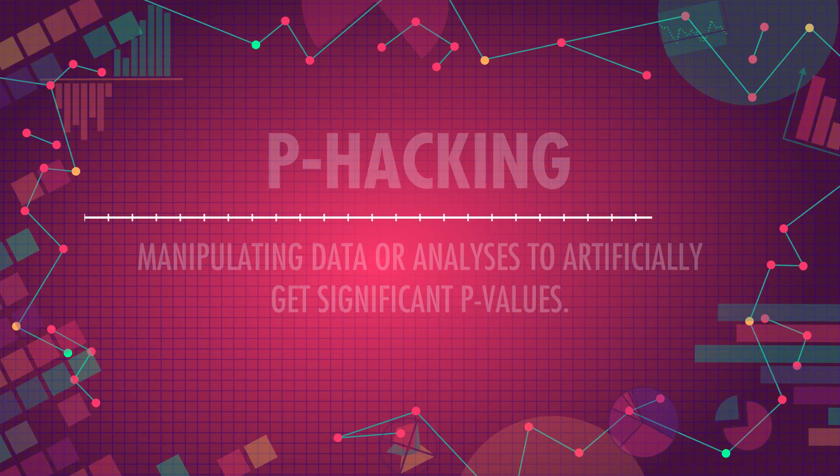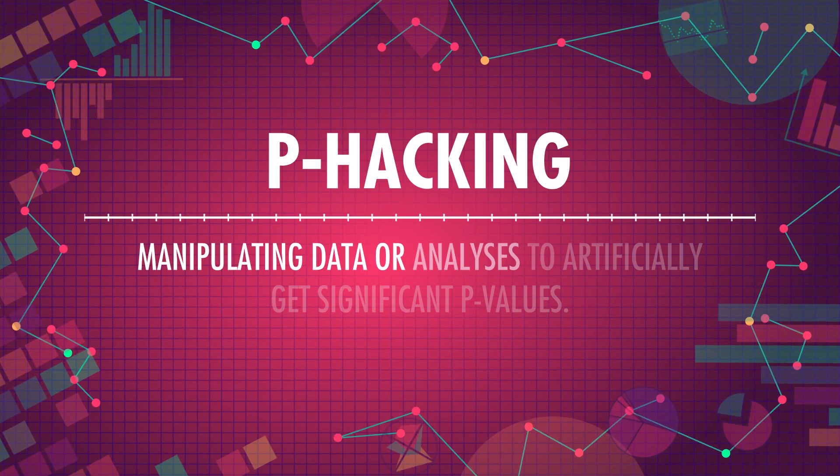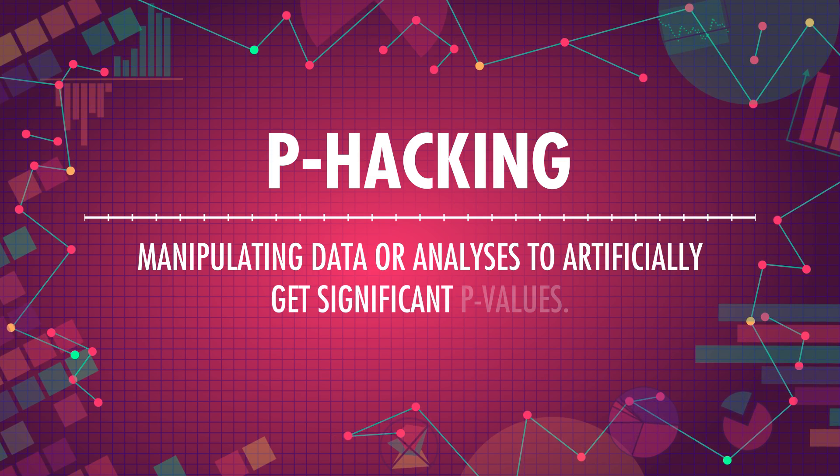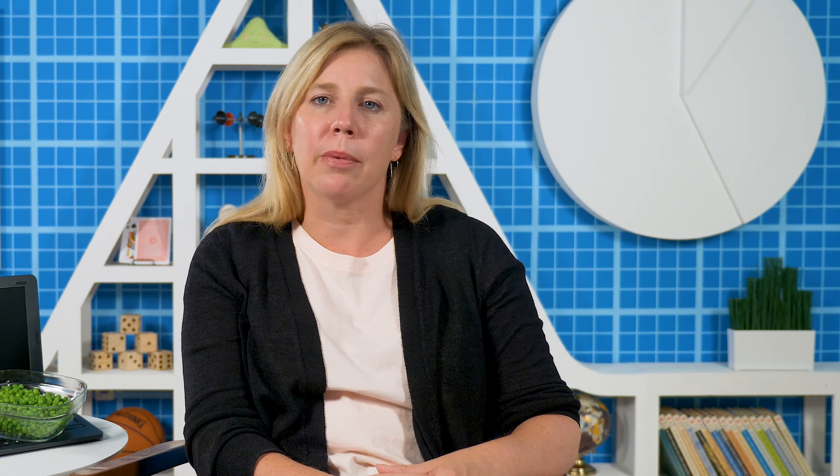Stats gets a bad rap, and sometimes it makes sense why. We've talked a lot about how p-values let us know something significant in our data, but those p-values and the data behind them can be manipulated, hacked — p-hacked. P-hacking is manipulating data or analyses to artificially get significant p-values. Today, we're going to take a break from learning new statistical models, and instead look at some statistics gone wrong.